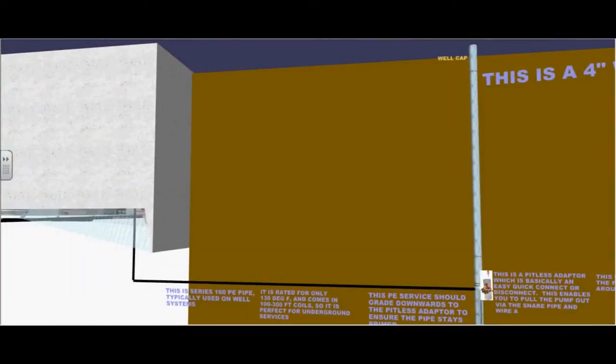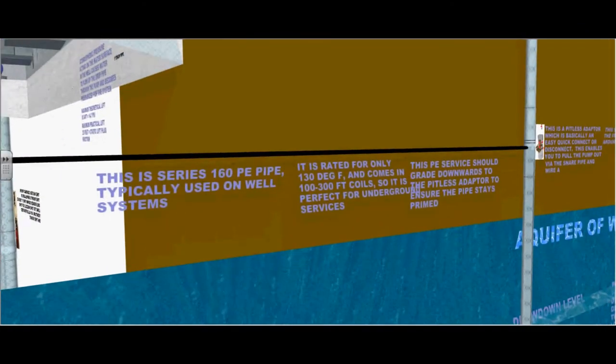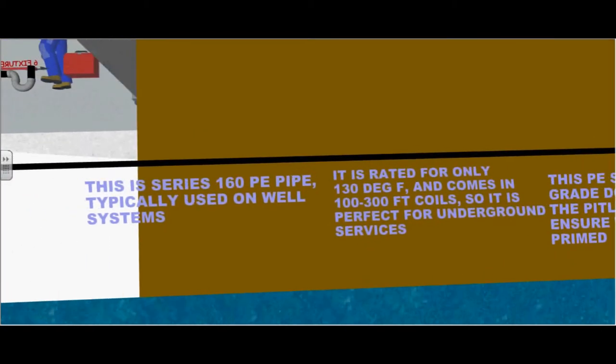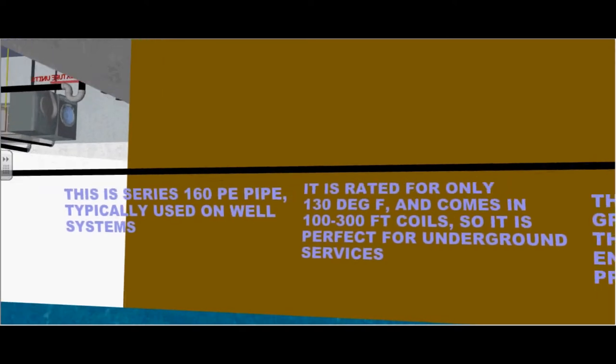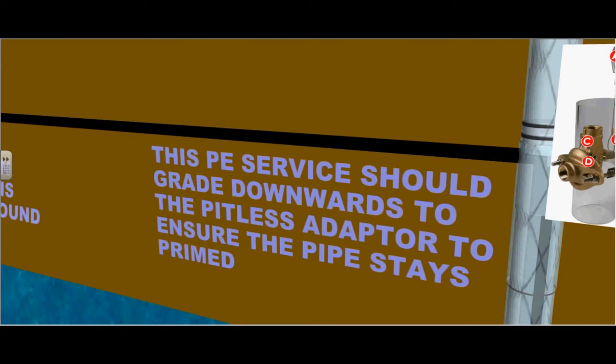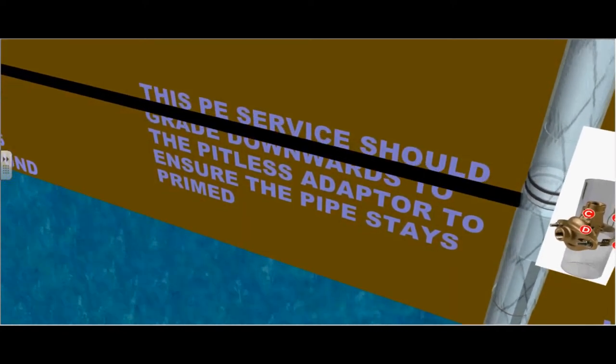This is a series 160 polyethylene pipe typically used on well systems. It is rated for only 130 degrees Fahrenheit and comes in 1 to 300 foot coils, so it is perfect for underground services. This polyethylene service should grade downwards towards the pitless adapter to ensure that the pipe stays primed.